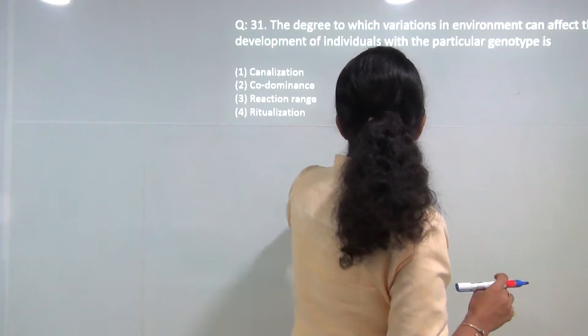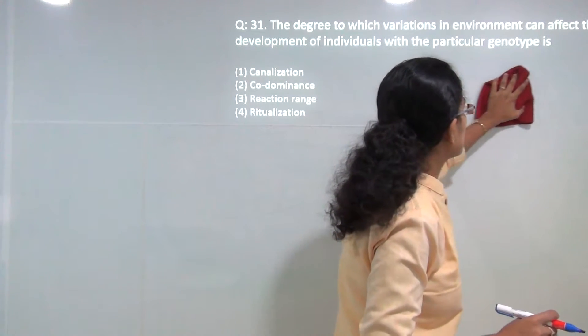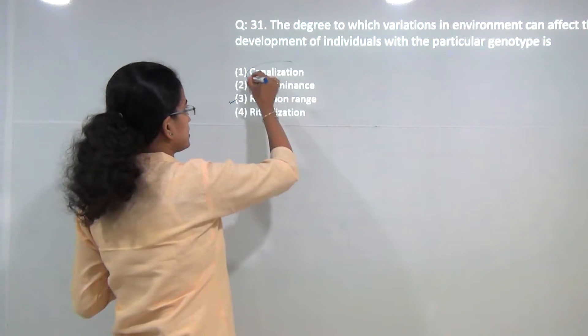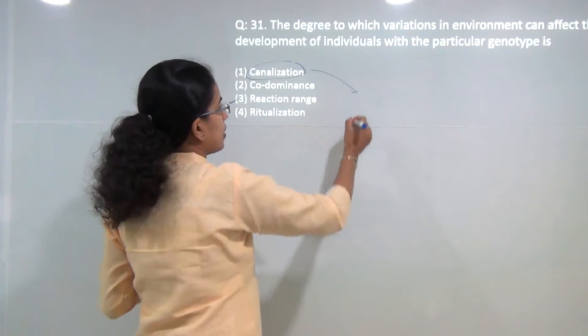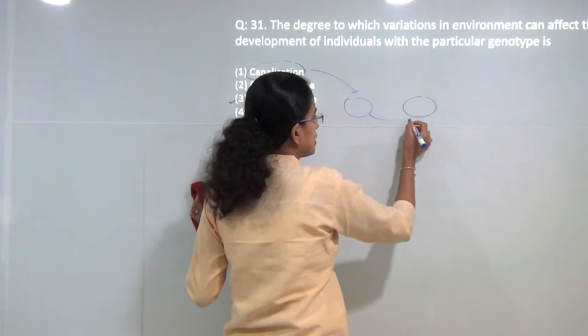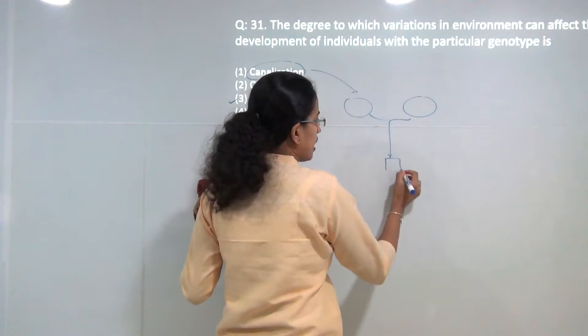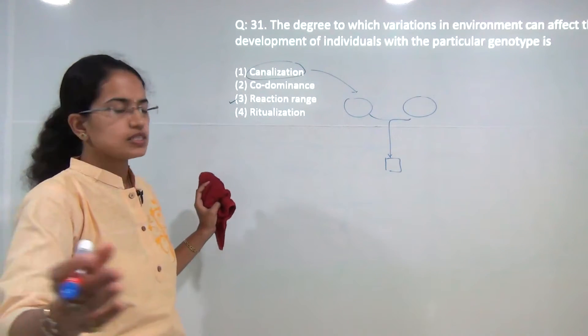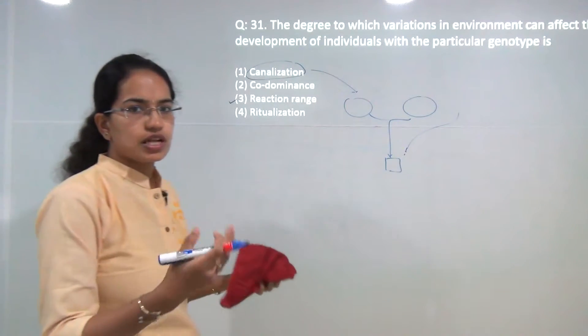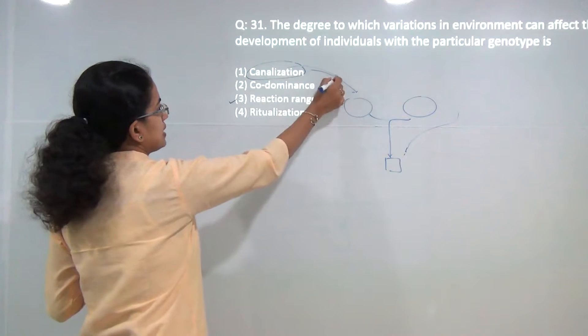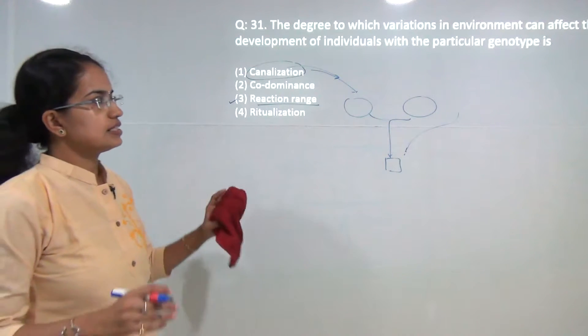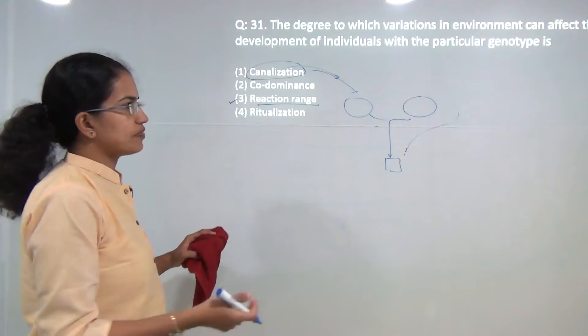Next, the degree to which variation in the environment can affect the development of an individual with a particular genotype is known as reaction range. The confusing thing here was with canalization. However, canalization talks about how different genotypes as well as different phenotypes can produce a similar output. For example, different species could lead to formation of one human being, that was Darwin's theory of evolution. Here we are talking about reaction range, the degree of variations in the environment which can affect an individual's development with a particular genotype.